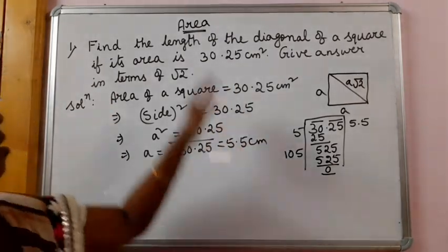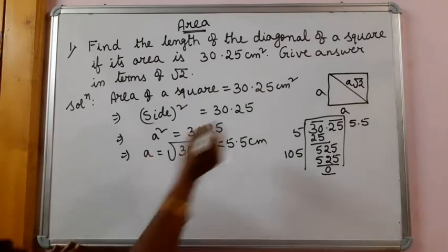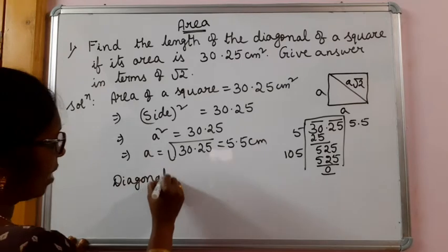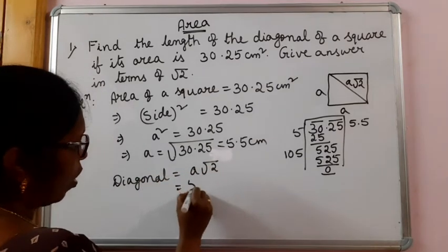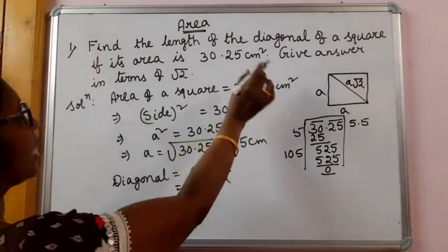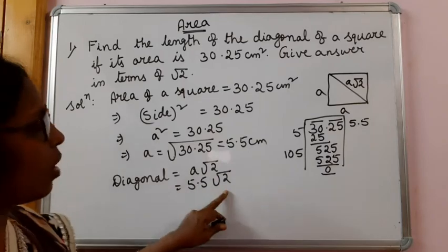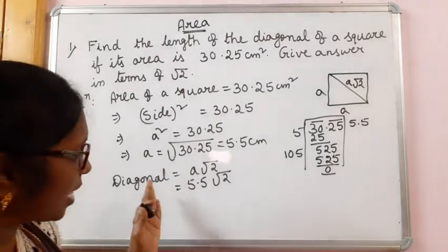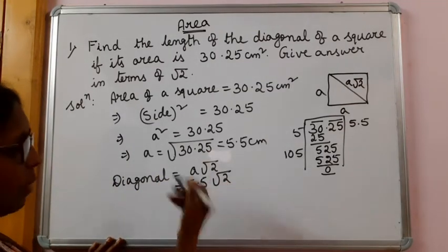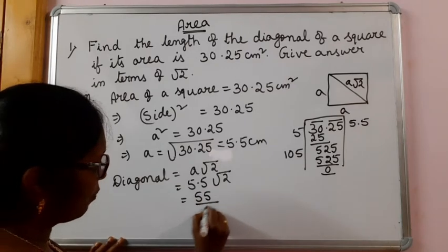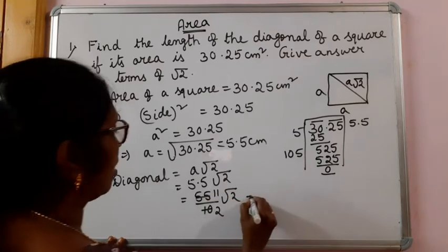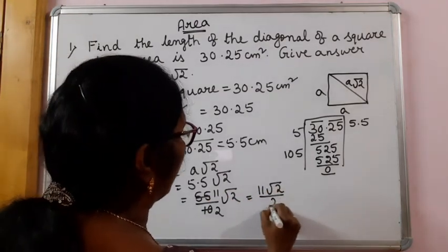We found the side of the square, but we have to find the length of the diagonal. Just now I told you how to find the diagonal of the square — diagonal is equal to side root 2, so that is 5.5 root 2. Here it is given to give the answer in terms of root 2, so we can show the answer in root 2. But 5.5 looks a bit odd, so 5.5 can be converted to a fraction: 55 by 10 root 2, simplifying gives 11 root 2 by 2 cm.